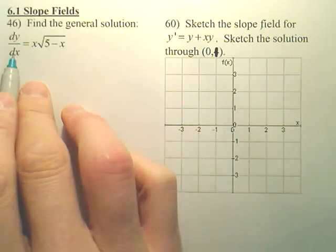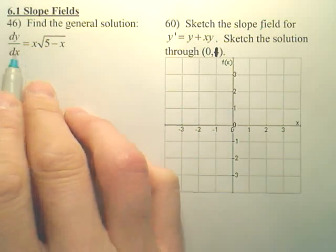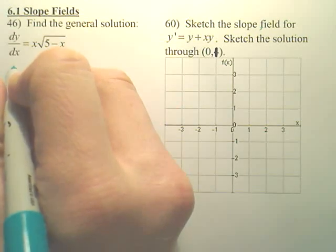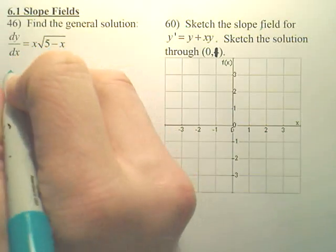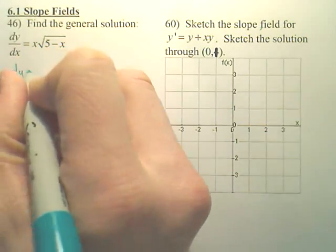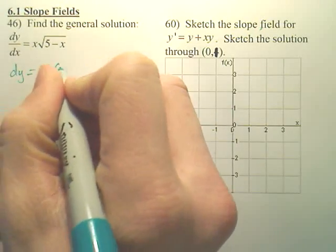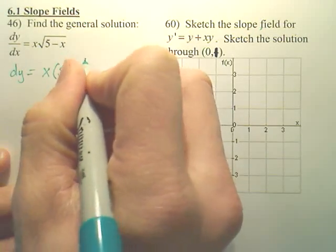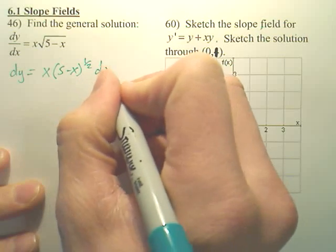If I want to find the general solution, I want to find the equation that gave you this derivative. In order to do that, you first have to multiply dx over. So you get dy equals x, and this is 5 minus x to the 1/2 dx.